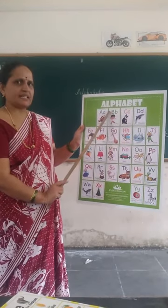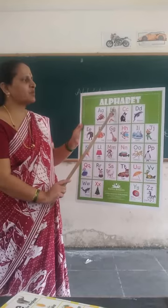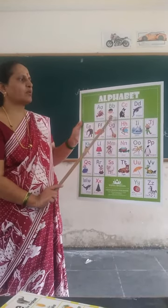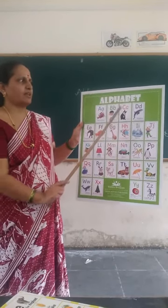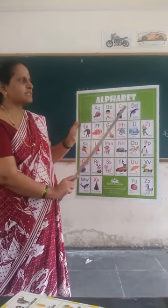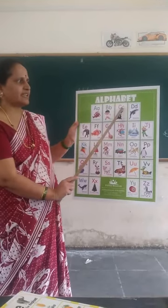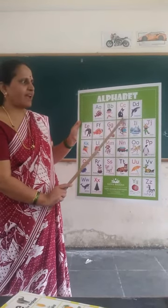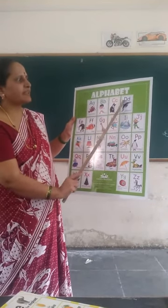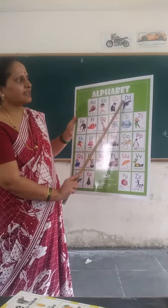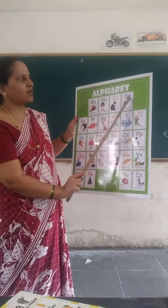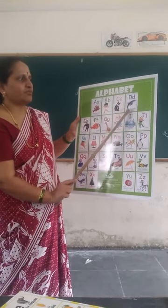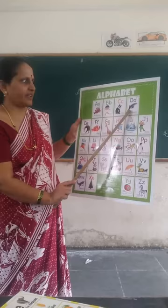Capital B. Small b. B for? Boy. Capital C. Small c. C for? Cat. Capital D. Small d. D for? Dolphin.